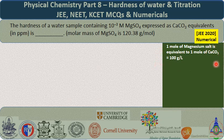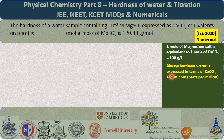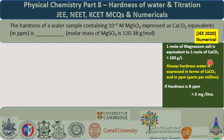Hardness is always expressed as calcium carbonate in terms of ppm — parts per million. That is, in 1 million parts of water, so many parts of calcium carbonate are present. If hardness equals x ppm, that indicates x milligram of calcium carbonate present per litre of water.